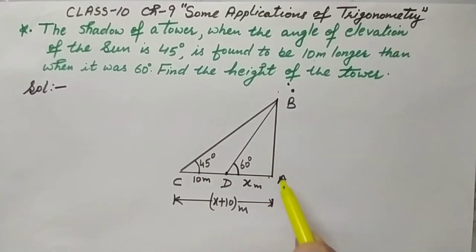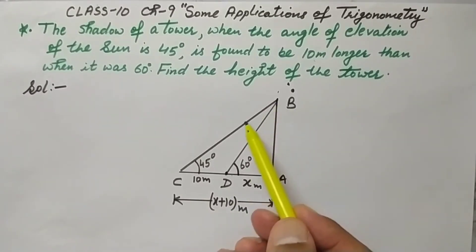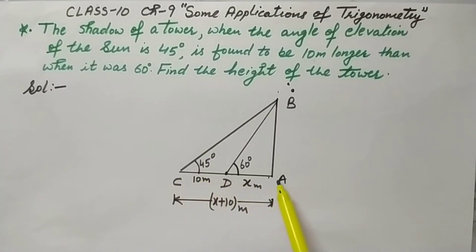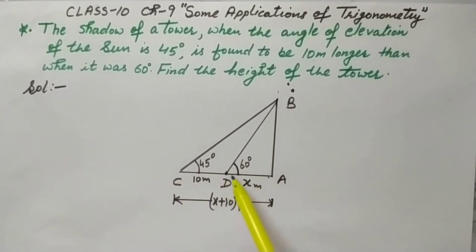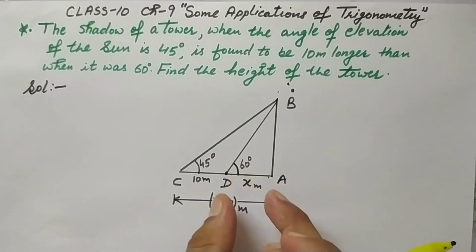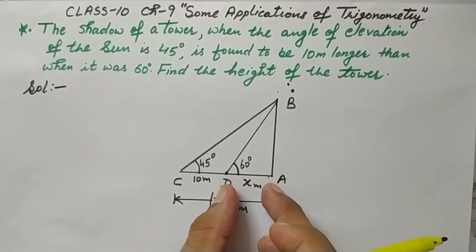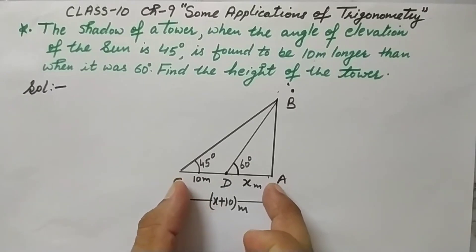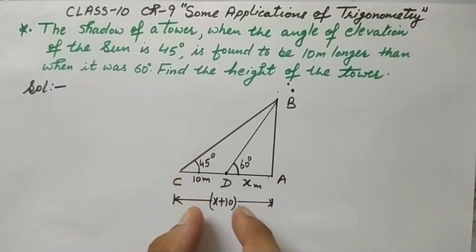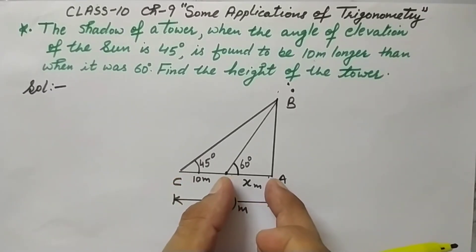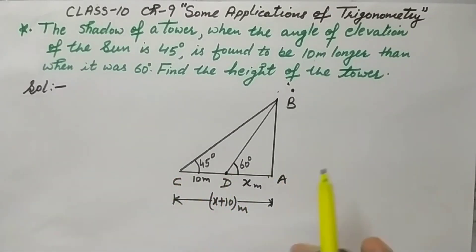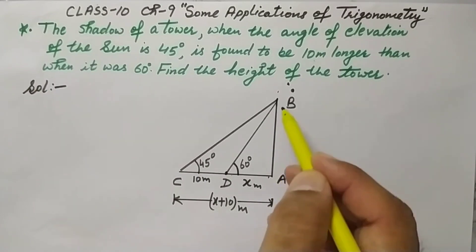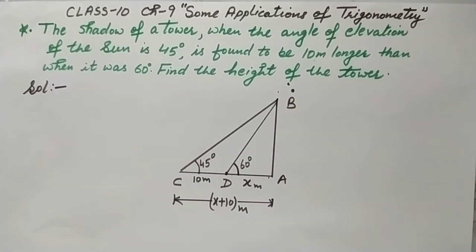AB is the tower. When the angle of elevation is 45 degrees, AC is the shadow. When the angle of elevation is 60 degrees, AD is the shadow, which is 10 meters smaller. So AC is X plus 10 meters and AD is X meters. In this question, we need to find out the height of the tower AB.